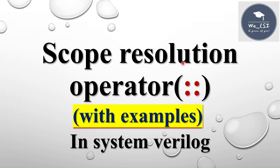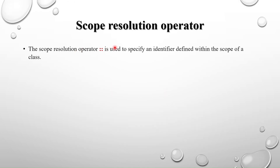Welcome back to SystemVerilog sessions. In this session I am going to discuss the scope resolution operator. In SystemVerilog, the scope resolution operator is used to specify an identifier defined within the scope of a class. The scope resolution operator is two colons. Whatever identifiers — data, functions, or tasks — are inside the class, in order to refer to them outside of the class scope or outside of the class hierarchy, we use the scope resolution operator.